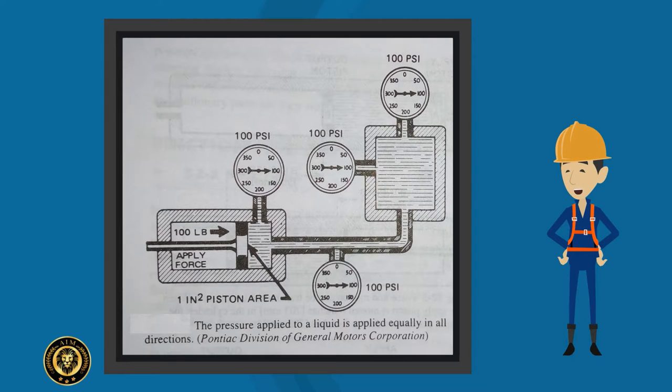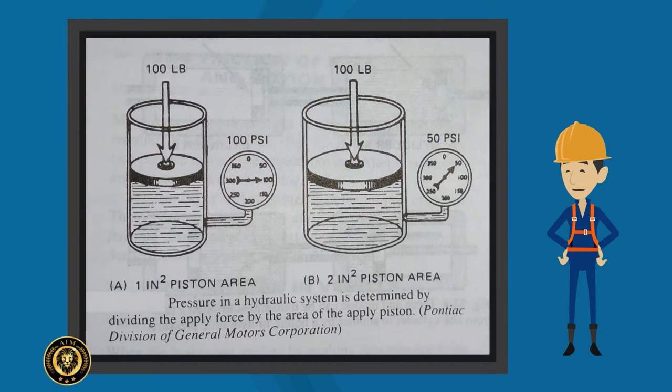This is 100 pounds per square inch which becomes 690 kilopascal. Note that regardless of position, all gauges in the figure show a pressure of 100 psi.